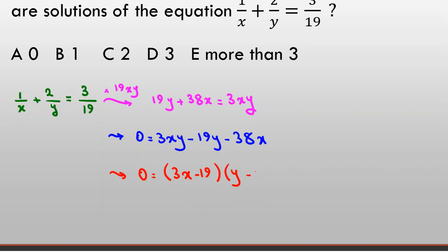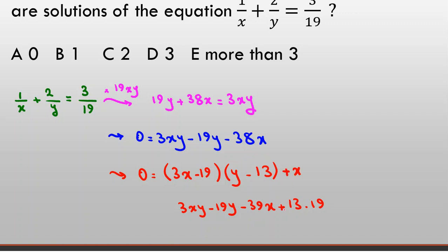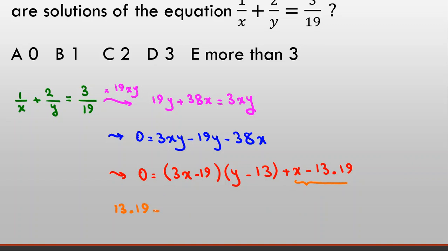Because I want negative 19y, I place this here. I want to reach 38x, but if I place any number I won't reach 38x because I have 3 here. The nearest number gives 3xy − 19y − 39x + 13×19. Since I have 39x but need 38x, I should add x, giving minus 13×19 = 0.